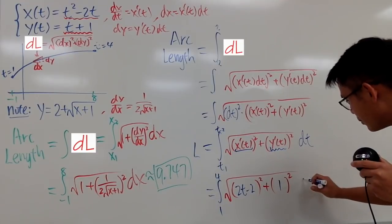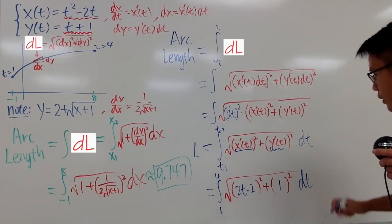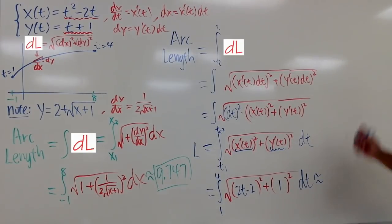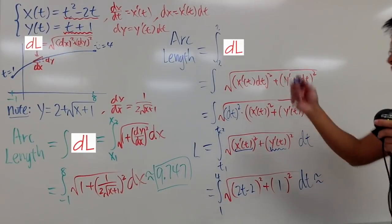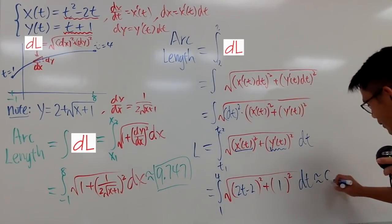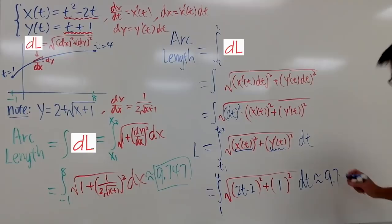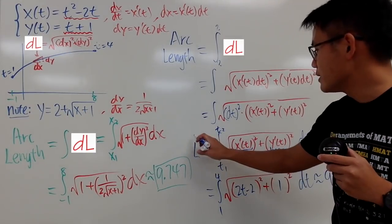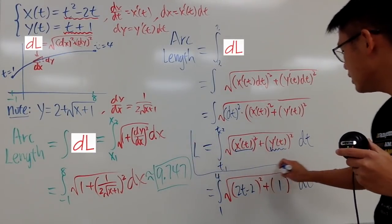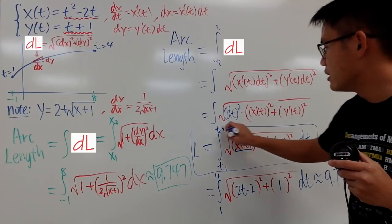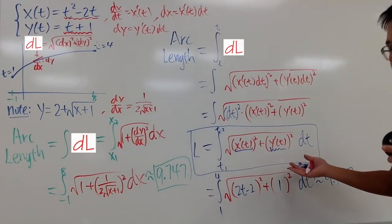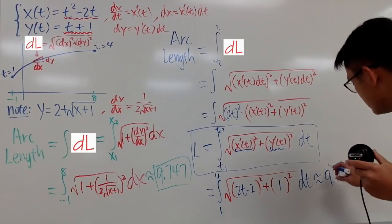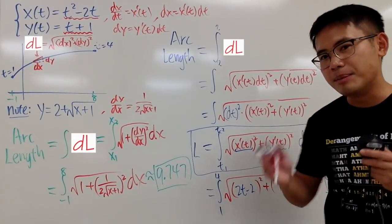Anyway, in the end here, you put down the dt. You are in the t world. Go ahead, calculate that. I can wait for you guys. But I will just use the calculator with you guys. Which, of course, you know the answer: 9.747. Anyway, the most important part is this. This is how we calculate the arc length in the parametric equation situation. That's pretty much it. And let me know if you guys have any questions.